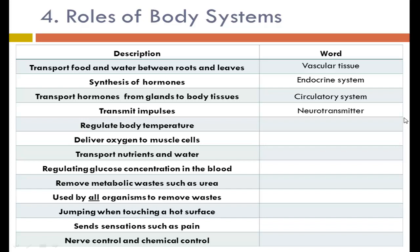Transmitting impulses is the job of a neurotransmitter. Regulating body temperature is also a function of the circulatory system: whenever we get hot, our blood vessels dilate and are closer to the skin, allowing heat exchange with the environment to cool us down. Delivering oxygen and transporting nutrients and water are also roles of the circulatory system. Regulating glucose concentration in the blood is an example of regulation — a feedback mechanism that measures glucose levels and tells the body whether to break down glycogen to make glucose or store glucose as glycogen.